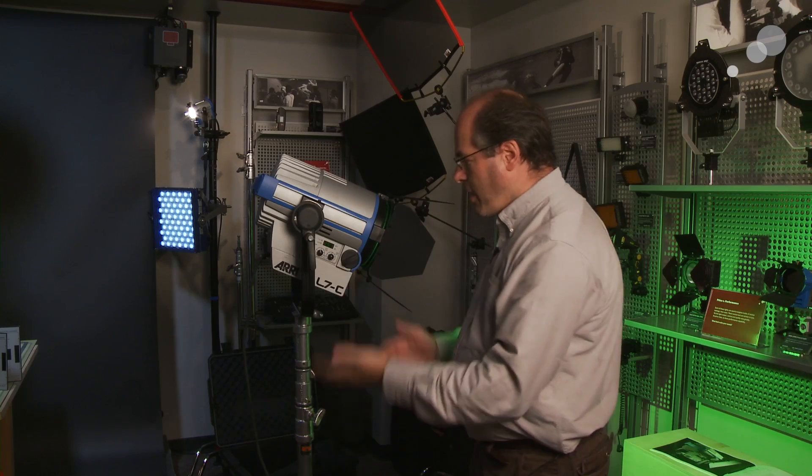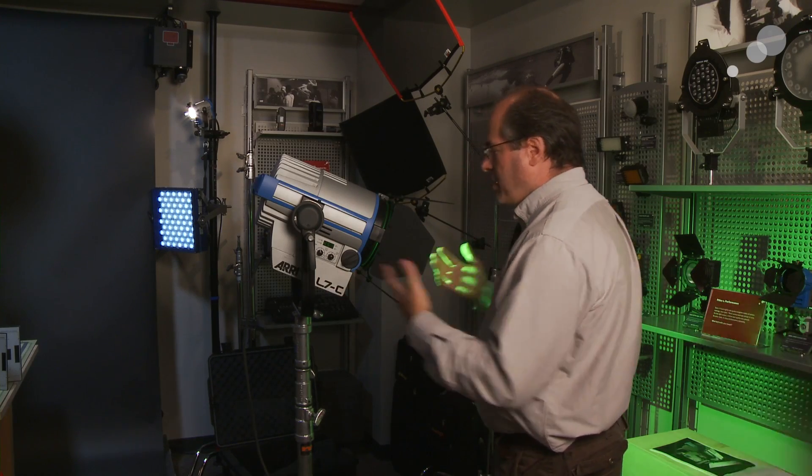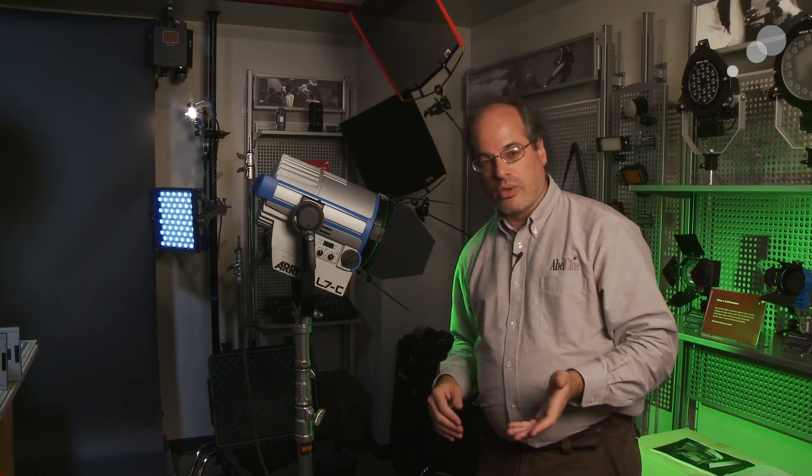Now, it is AC powered at only 220 watts, yet gives you the equivalent of 1,000 watts of light. So the output of a tungsten light at 1,000 watt or a baby Fresnel would be the equivalent lumens, equivalent brightness, coming from this light at only 220 watts.